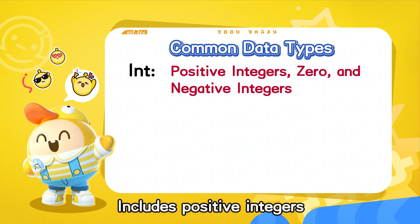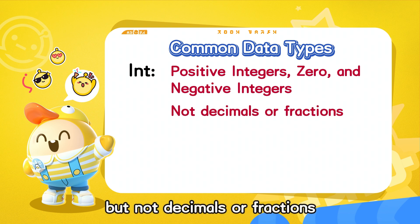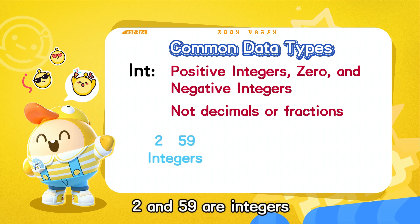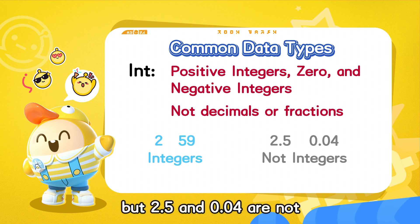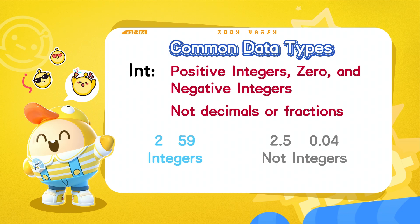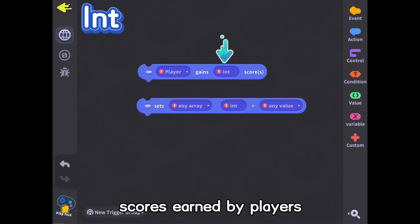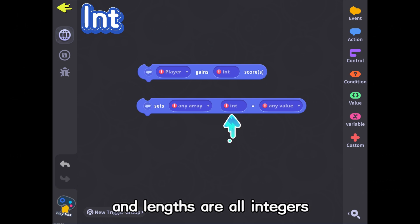Int includes positive integers, zero, and negative integers, but not decimals or fractions. For example, 2 and 59 are integers, but 2.5 and 0.04 are not. In games, scores earned by players, array index values, and lengths are all integers.